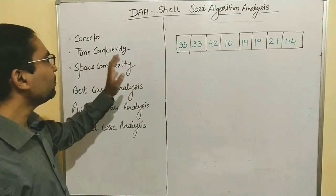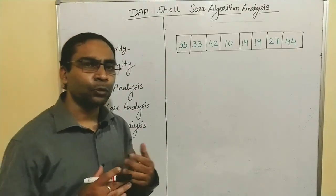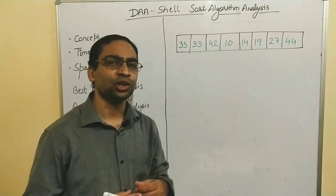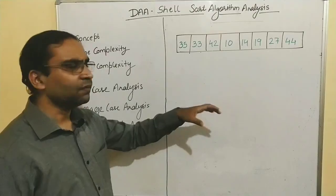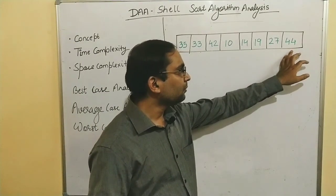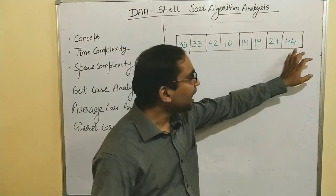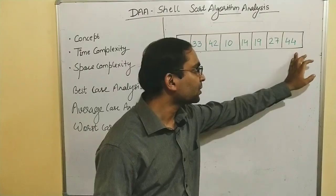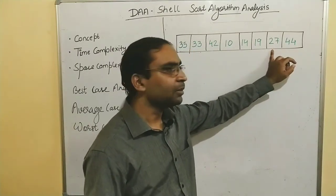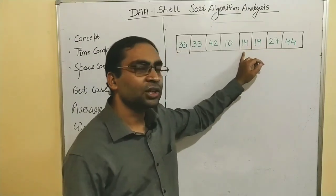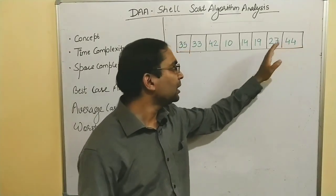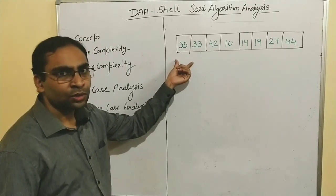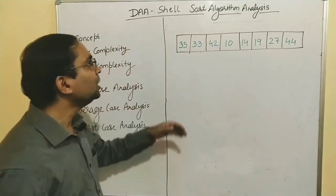Shell Sort is the improved version of Insertion Sort. The problem with Insertion Sort is that we have to perform large shifts. If a smaller number is located far from the front, it has to be shifted from position n-1, to n-2, to n-3, and so on. Those large shifts are reduced or avoided in Shell Sort.